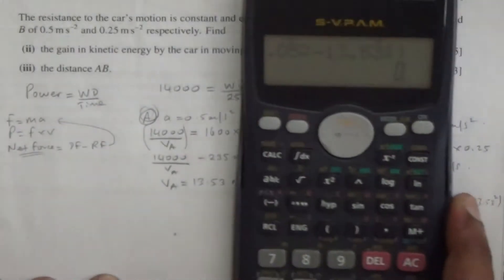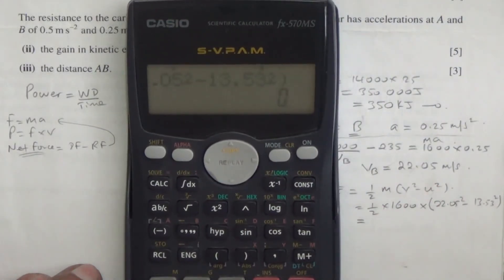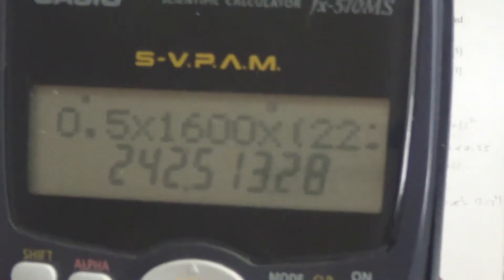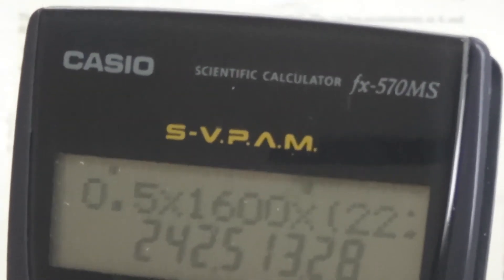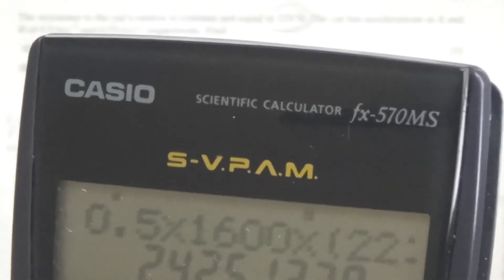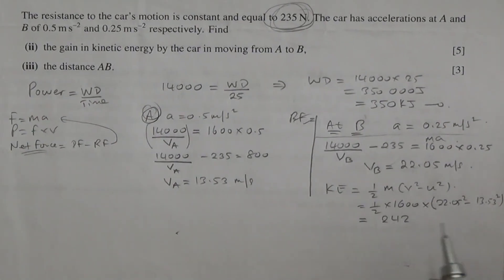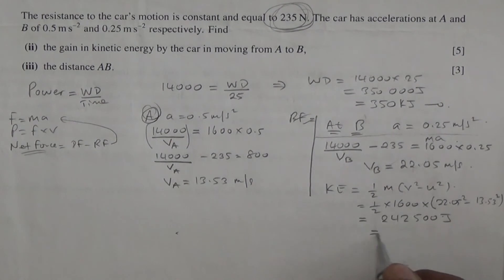And if you do it on your calculator again, you will see that 0.5 times 1600 times in brackets 22.05 squared minus 13.53 squared. So that's going to give us 242,513 joules, or 242.513 kilojoules.